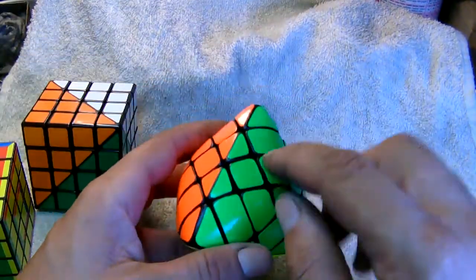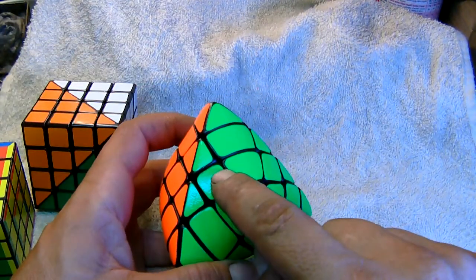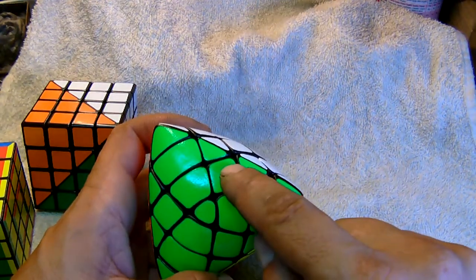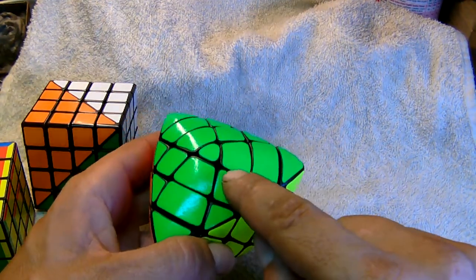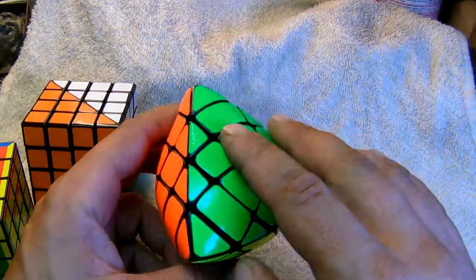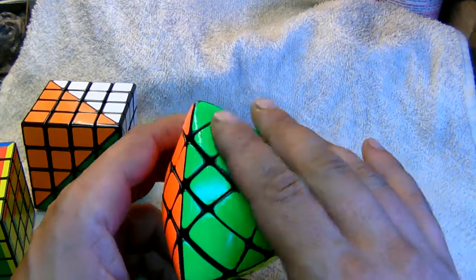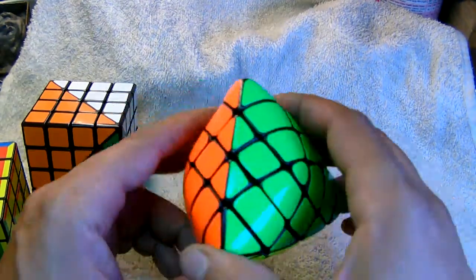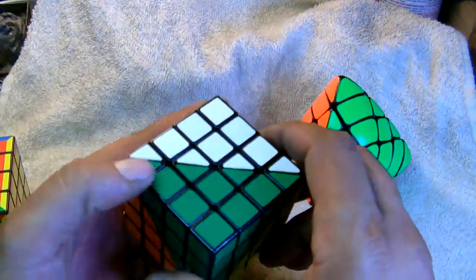because there are similarities in the pieces. For example, this green piece here is similar to this green piece here and to this piece here, and they can change places without affecting the solved state of the puzzle.